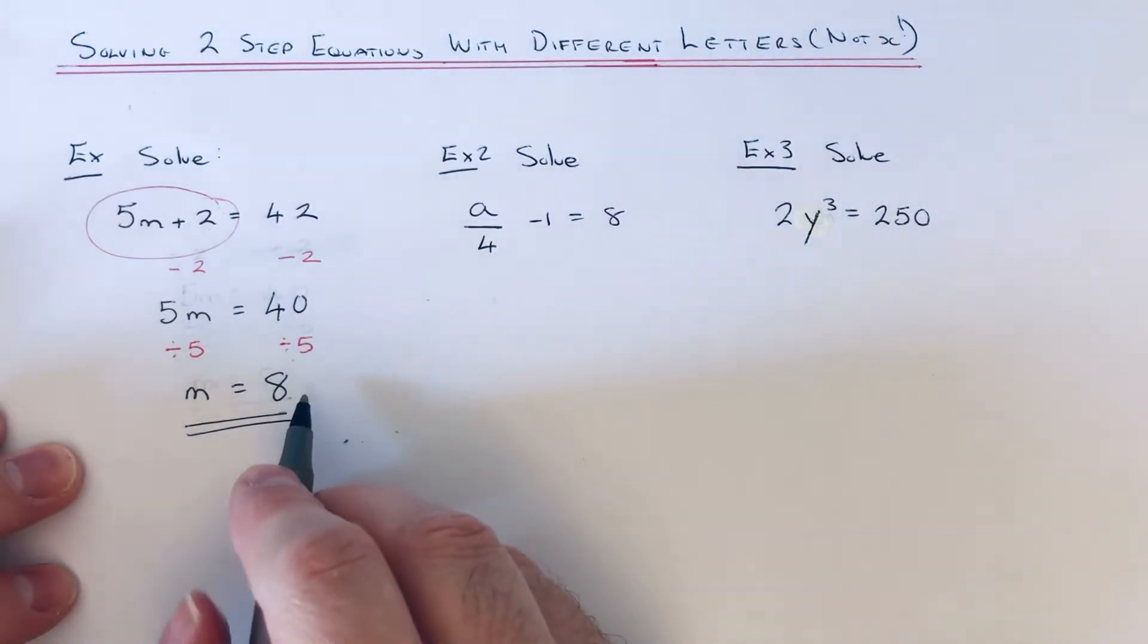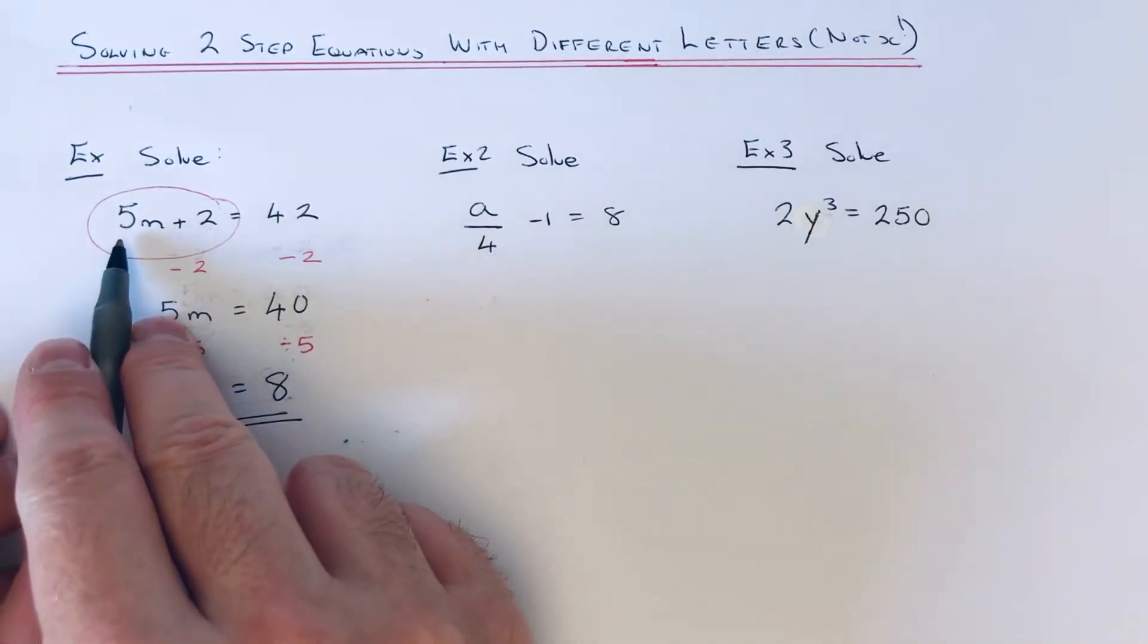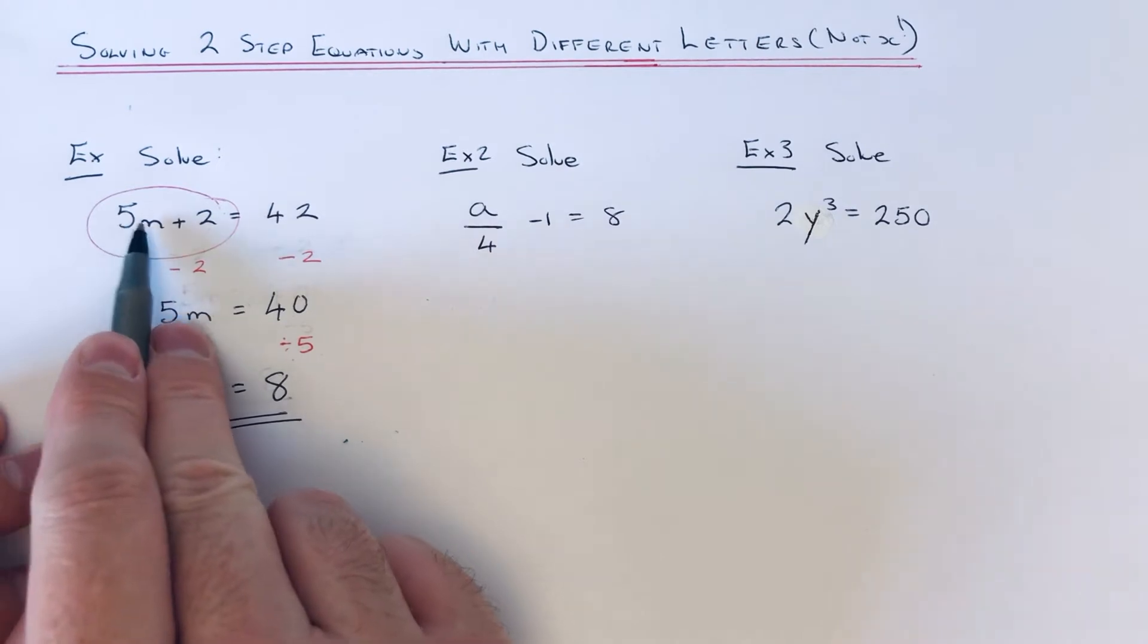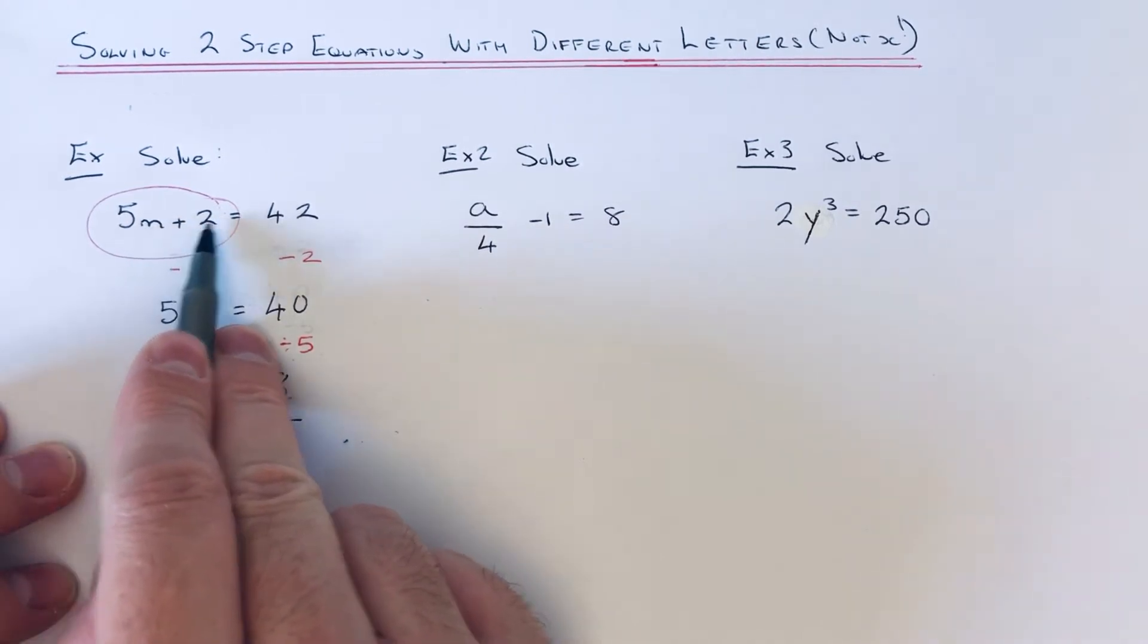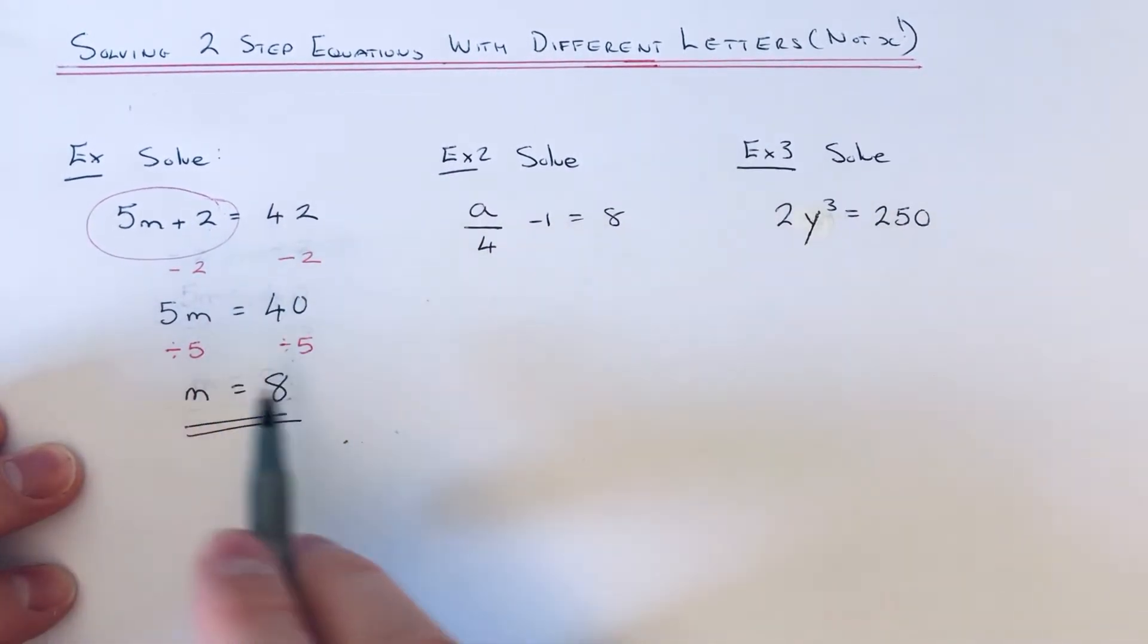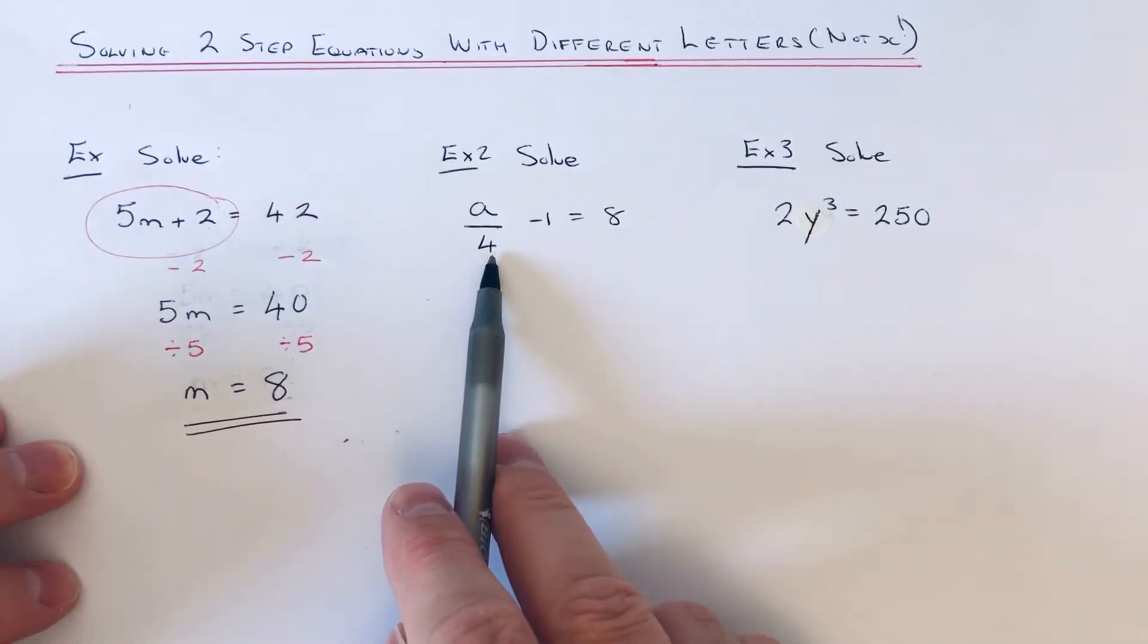40 divided by 5 is 8. So you can check this final answer as well by putting it back into the equation at the start. So 5 times 8 is 40. Add 2 gives 42. So let's move on to example 2.